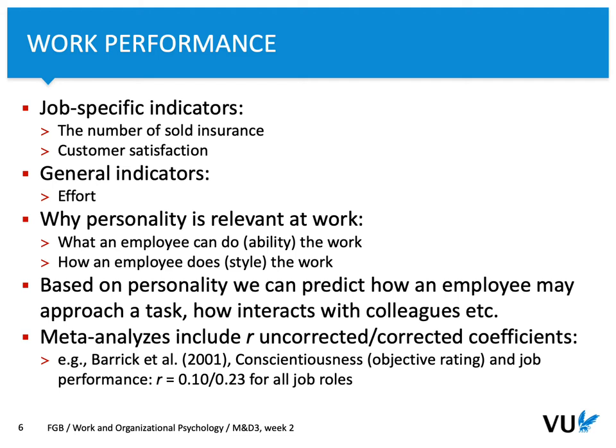Which value should we interpret? Corrected values take into account a number of problems and errors, including low reliability. So typically we interpret the corrected values. Based on this meta-analysis, we can conclude that conscientiousness is well related to job performance, with an effect size of 0.23 — almost a medium effect size. Importantly, this takes into account all job roles, so it is a result across multiple types of job roles.